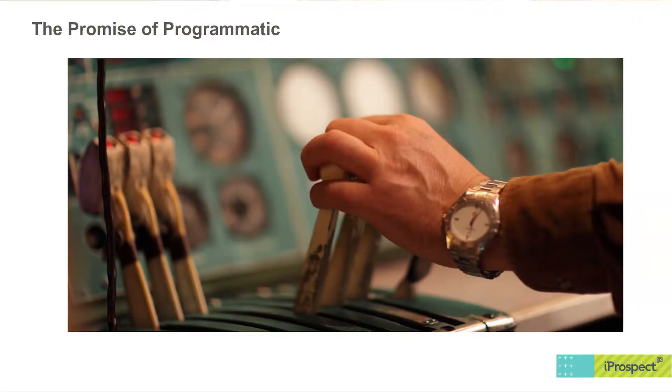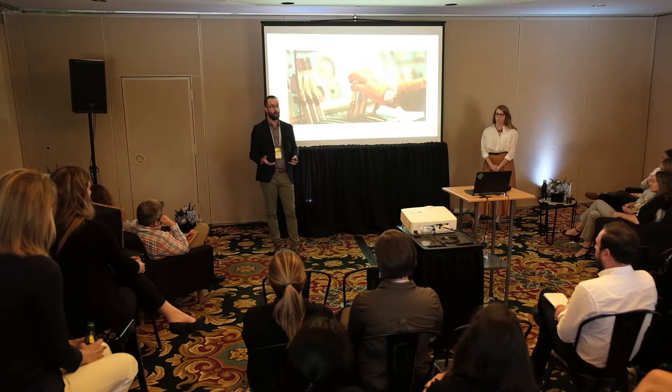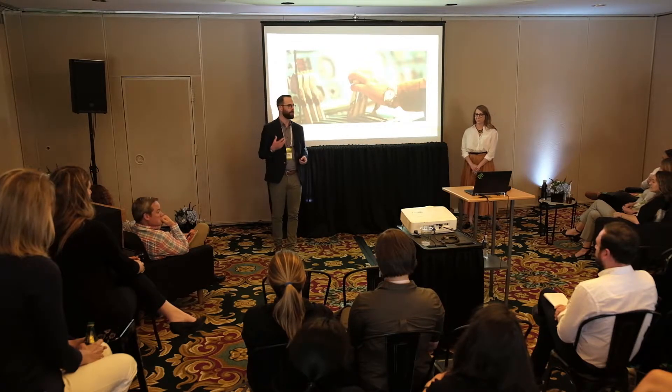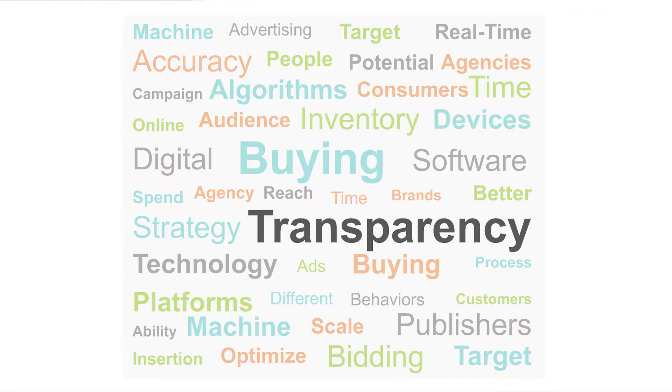It's extremely topical, but why is there so much attention? The promise of programmatic was around control — in a lot of different ways. One is advertisers exercising control over their working media spend: getting transparency into pricing, understanding how their dollars are going toward working media. There's also control from an agency perspective, allowing our people to put their hands on the levers to drive results for clients.